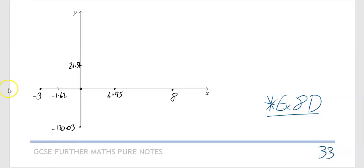We've got our points marked on. We had (-3,0), we had the origin (0,0), we had (8,0), and then we had a minimum turning point at (4.95, -120.03), and we had a maximum turning point at (-1.62, 21.51). We're going to go ahead now, I'm going to draw this graph, and then I will talk to you about the last thing.